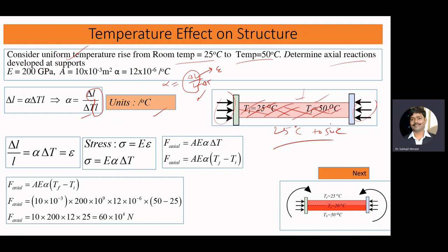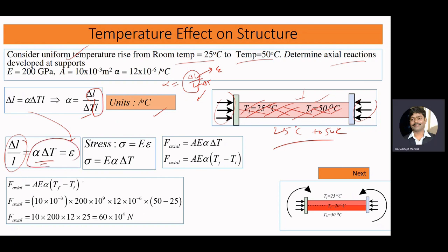We know the strain quantity is delta_L by L. If we consider delta_L/L = α·ΔT, this part is your strain. And we know stress equals E times epsilon, so stress is equal to E·α·ΔT. Once we know how much stress is reacting, we can identify how much axial force is developing. The axial force equals stress times area, so the equation for axial force is A·E·α·ΔT.